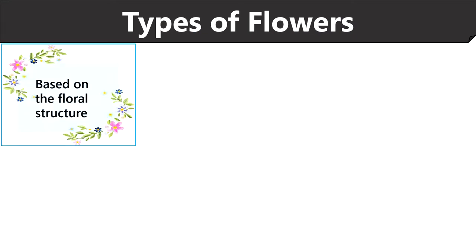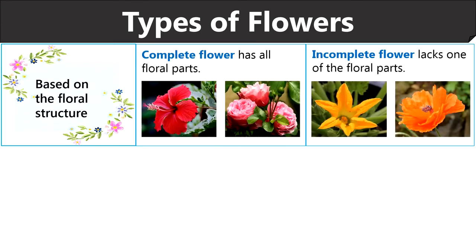We know that the basic structure of a flower comprises sepals, petals, stamens and carpels. So based on all the four components of a flower, flowers can be classified into two types: complete flowers and incomplete flowers.